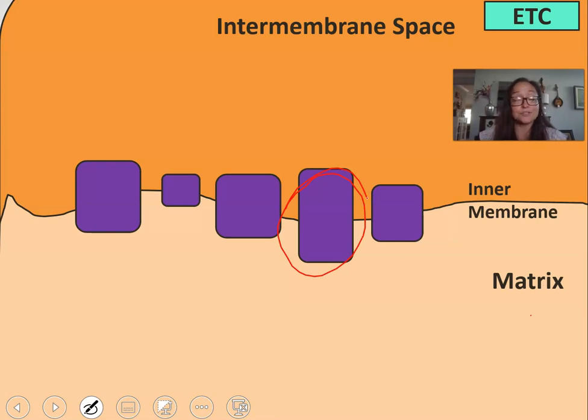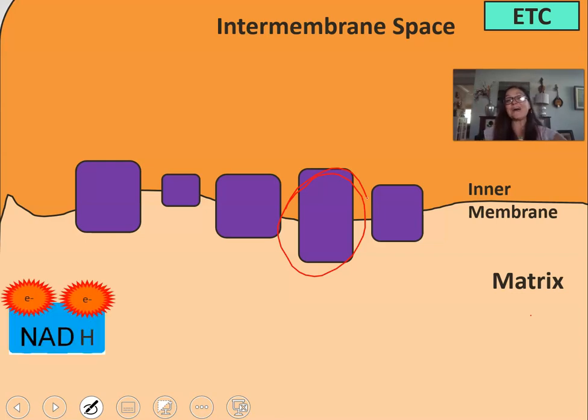In our previous videos we saw in glycolysis, the oxidation of pyruvate, as well as the citric acid cycle. In each of those metabolic pathways we had electron carriers become reduced, and these electron carriers' main purpose is to carry the electrons over to the electron transport chain. So we are now going to oxidize these electron carriers.